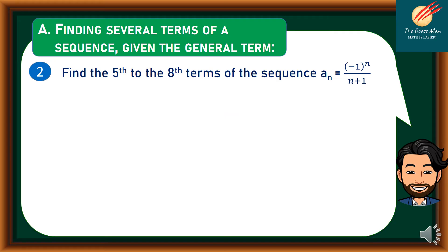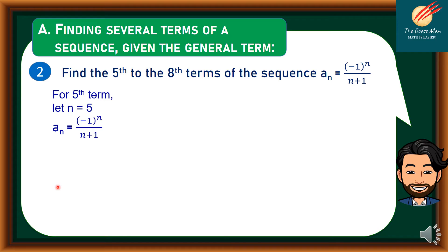For Problem 2, find the fifth to eighth terms of the sequence a sub n equals negative 1 raised to n, divided by n plus 1. For the fifth term, let n equal 5 and substitute into the general term: a sub 5 equals negative 1 raised to 5, all over 5 plus 1, so the fifth term equals negative 1 over 6.